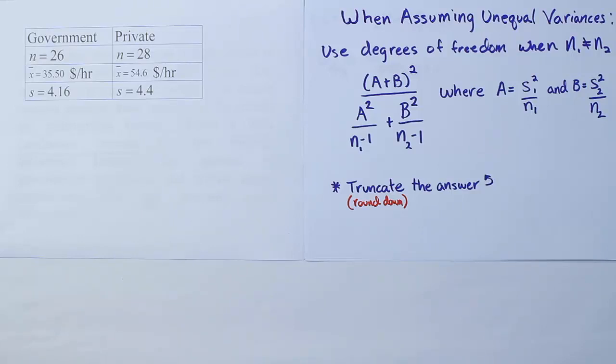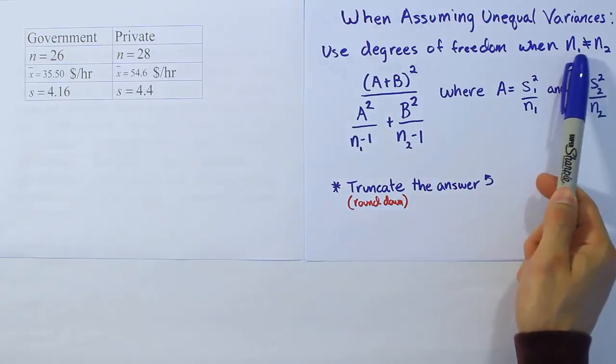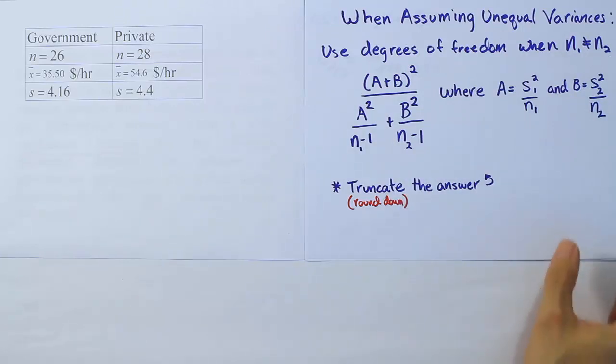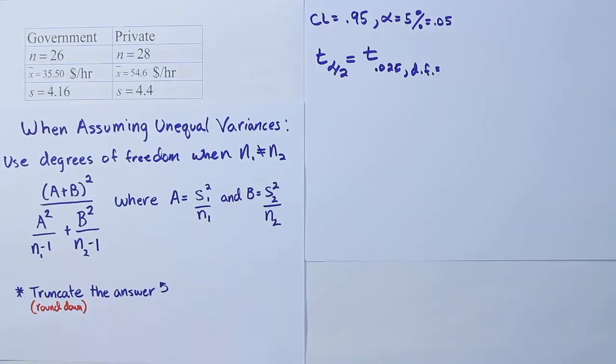It's an approximation method to estimate the degrees of freedom. What we're going to do is calculate this complicated fraction. When we're done, we're going to truncate the answer. When we say truncate, it just means round down, drop the decimal point off. Whenever the sample sizes are unequal, we'll use that formula. If the sample sizes are equal, we'll just use the traditional n1 plus n2 minus 2. But if they're not the same, we have to use this formula. Let's go ahead and calculate that formula for this problem.